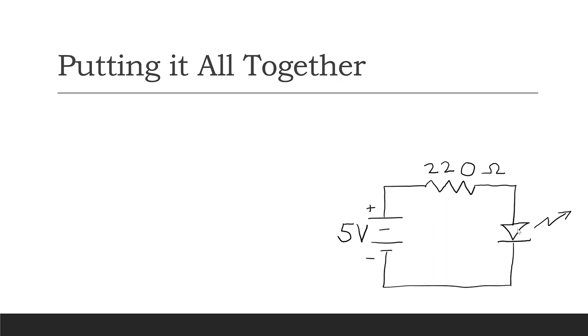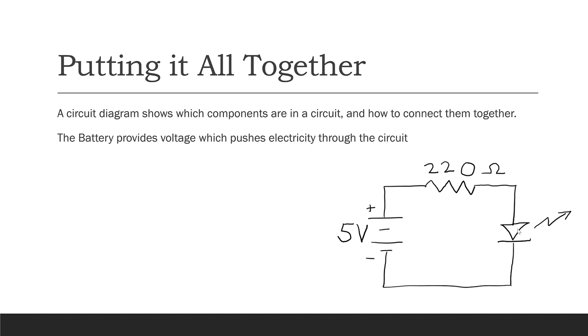So let's put it all together now. This is the circuit diagram we saw at the beginning, remember? So let's try and understand what's going on now. This diagram shows not only which components are in the diagram, but also how those components are connected to each other. In this case, the battery provides 5 volts, which pushes electricity through the circuit.